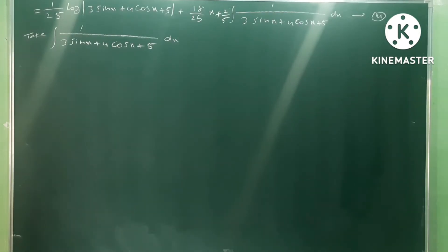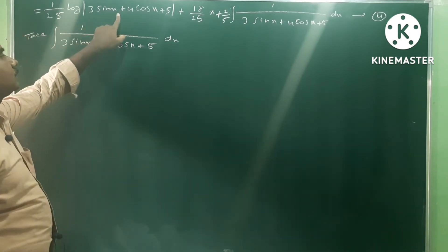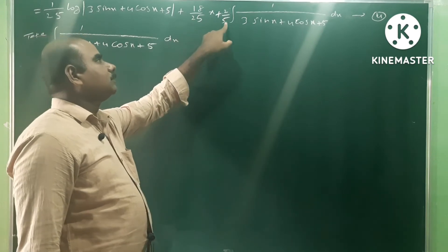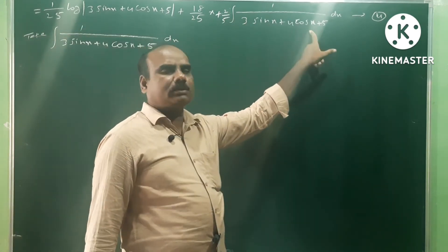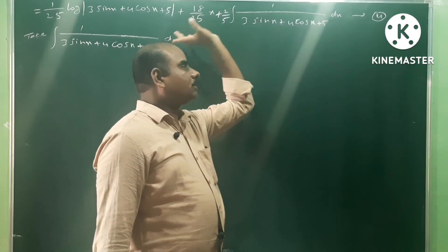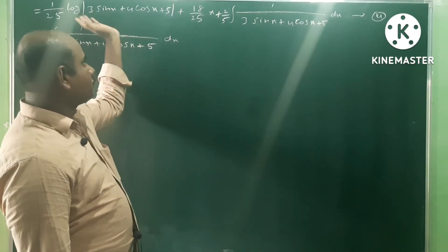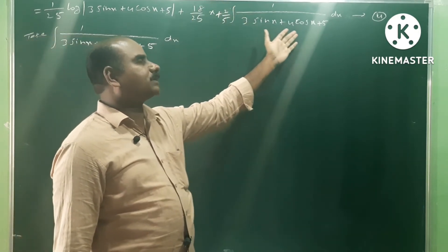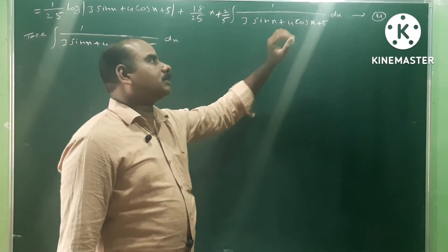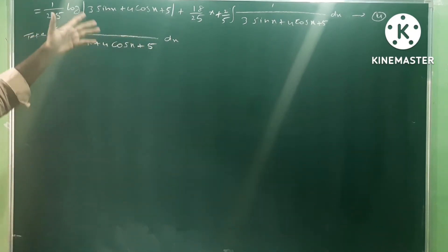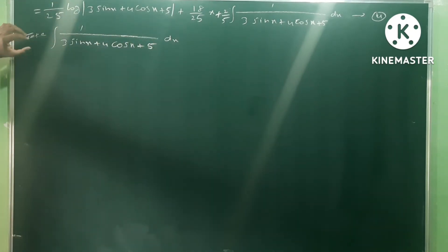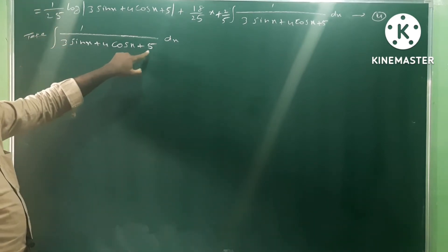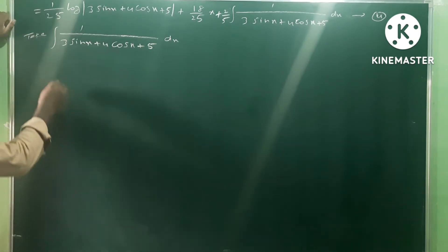So far we have: (1/25)·log|3sinx + 4cosx + 5| + (18/25)·x + (2/5)·∫1/(3sinx + 4cosx + 5) dx. The first two terms are integrated. For the third term, we need to evaluate ∫1/(3sinx + 4cosx + 5) dx separately using the model problem: ∫1/(a·sinx + b·cosx + c) dx.